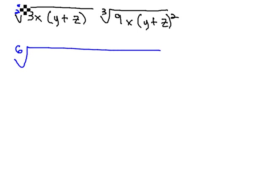To raise the exponent from 2 to 6, we multiply by 3, and to raise the index from 3 to 6, we multiply by 2. As we do, we'll also multiply all the exponents underneath the radical.